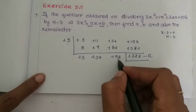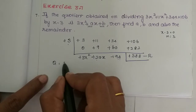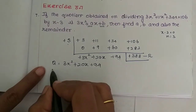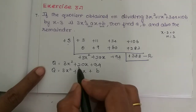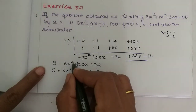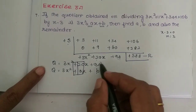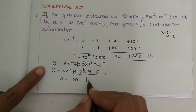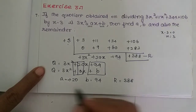So our quotient is 3x² + 20x + 94. The given quotient is 3x² + ax + b, so comparing: a is equal to 20 and b is equal to 94. Therefore a = 20, b = 94, and the remainder is equal to 388.